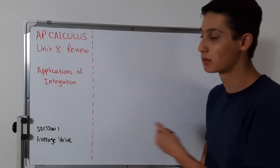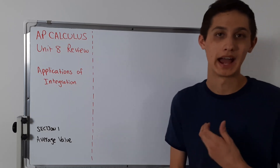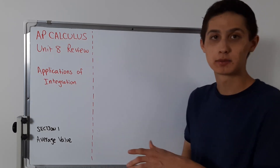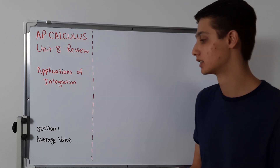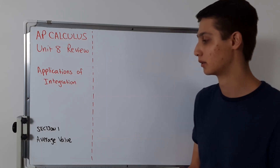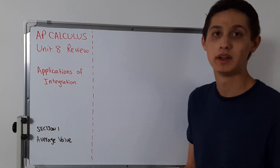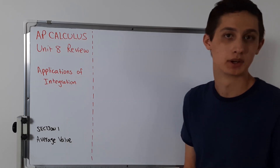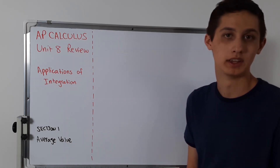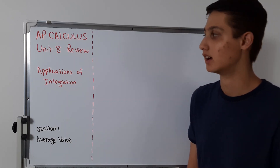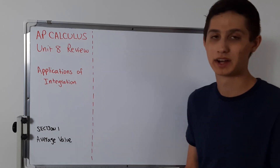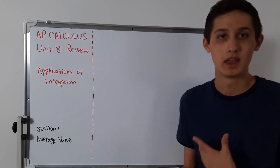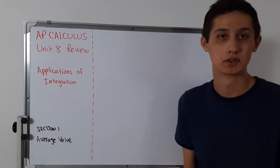The first thing I want to talk about is the average value of a function. We've talked about average rate of change — the average rate of change is something from algebra, where you take the slope by doing y2 minus y1 over x2 minus x1. That's average slope.